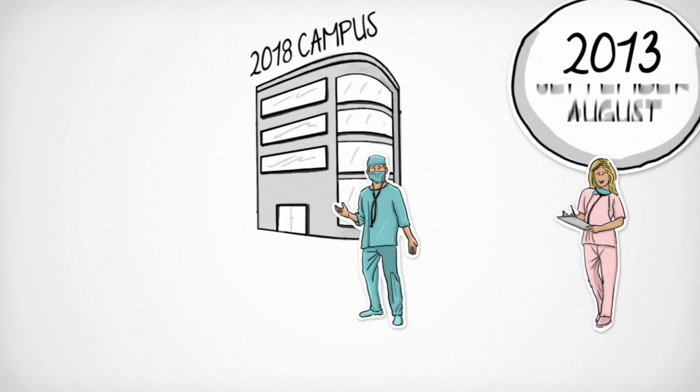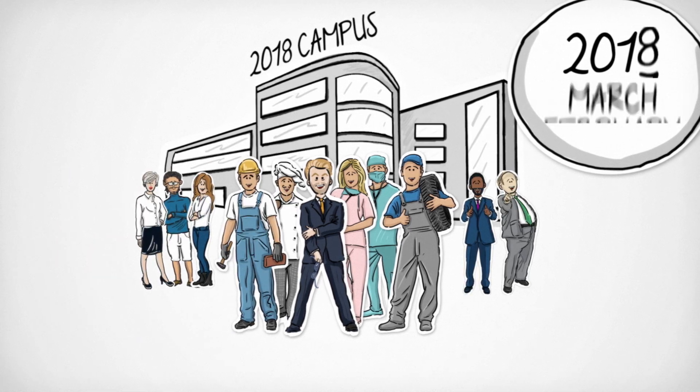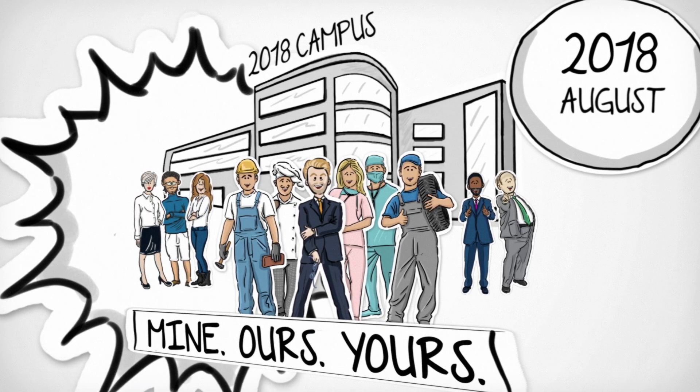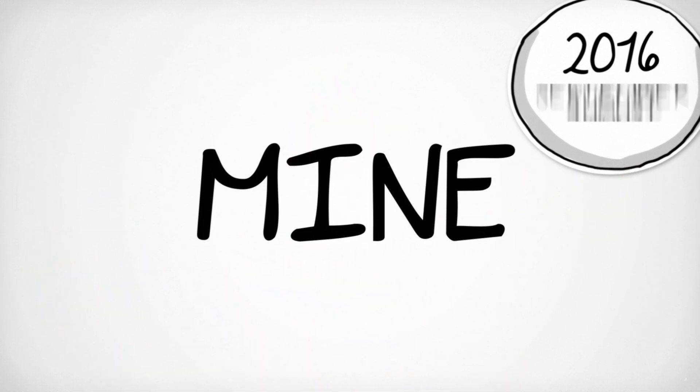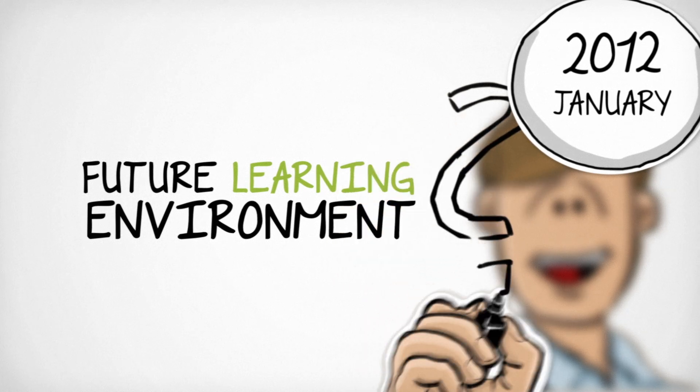Lahti University of Applied Sciences aims to have all of its facilities on the new campus by 2018. Campus development started in 2012 with the goal to define a future learning environment.